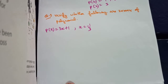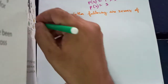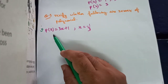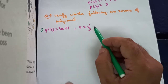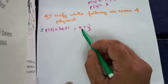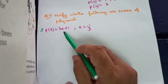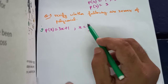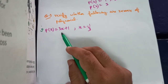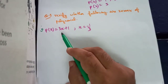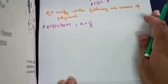Question number 3 asks us to verify whether the following are zeros of the polynomial. In the first part, we are given the polynomial 3x plus 1, and we need to check whether minus 1 by 3 is a zero. If on substituting x as minus 1 by 3 the value of the polynomial becomes 0, then we say minus 1 by 3 is the zero of the polynomial; otherwise it is not.